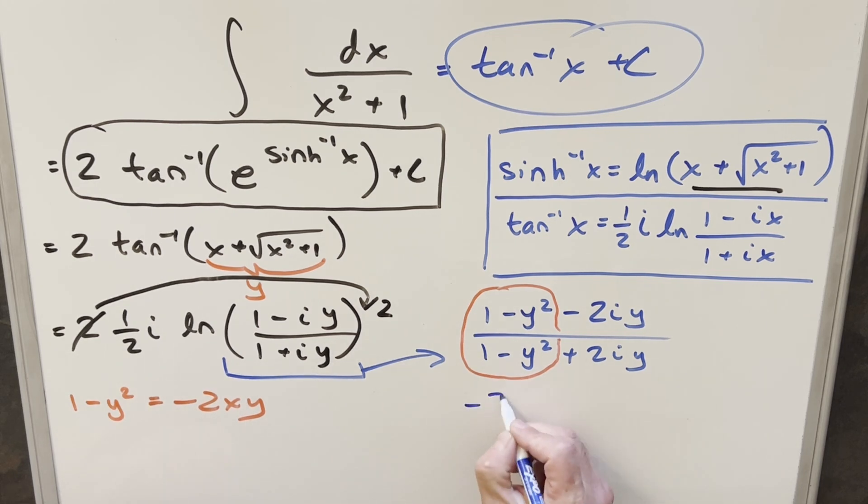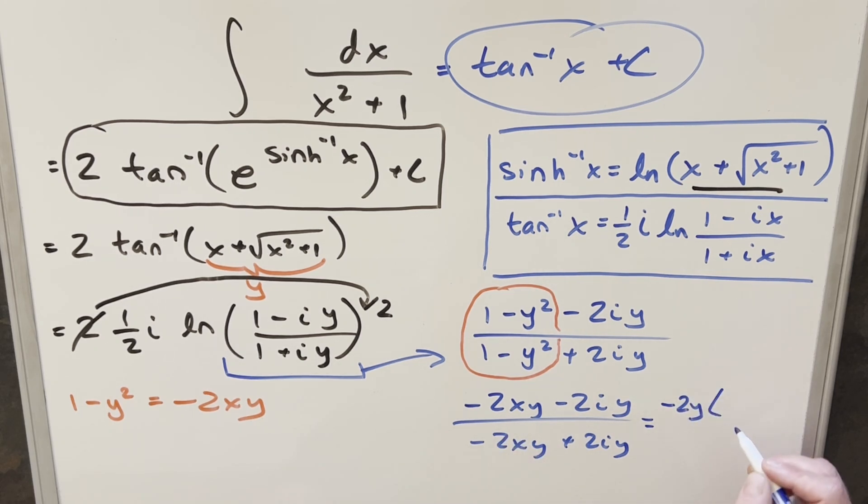Okay, so now that we have this value, minus 2xy, we'll plug it back in here. So I'm going to have minus 2xy minus 2iy. And then here, again, minus 2xy plus 2iy. Then I think I can factor out a minus 2y here in the numerator. So when I do that, this is just going to become x plus i. And then same kind of thing in the denominator. We factor out minus 2y. We're left with x minus i. Cancel out the minus 2y's. And so now we're just left with x plus i over x minus i. Let me clean up the board, and we'll see if we can simplify this a little more.